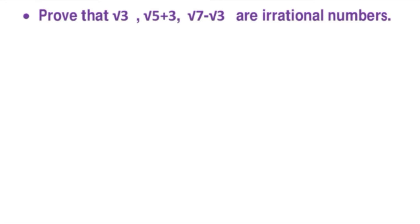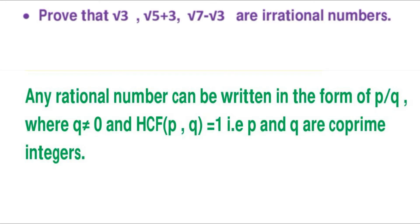The most important problem in this chapter is the proof of irrationality. You may get questions like: prove that √3, or √5 plus 3, or √7 minus √3 are irrational. To prove this, remember to first assume that √3 or √5 is a rational number, then write it in the form p over q. Moving on to the next unit — unit 2, algebra — which carries the most marks in your mathematics paper.